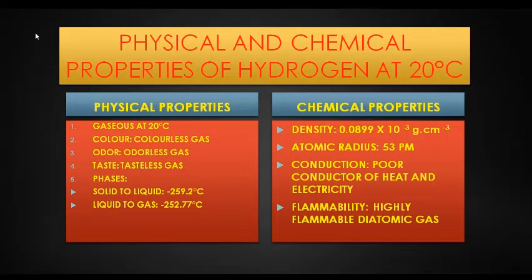Chemical properties: Its density is 0.0899 × 10^-3 g/cm³. Its atomic radius is 53 picometers, which is approximately 10^-12 meters. It is a poor conductor of heat and electricity. It is a highly flammable diatomic gas.